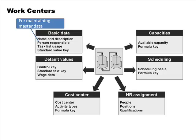In the master data you have various fields: the name of the work center, description, task list usage — meaning which kinds of task lists this work center may be used for, whether routing, rate routings, or master recipe. There's also person responsible, who maintains this master data, and the standard value key.